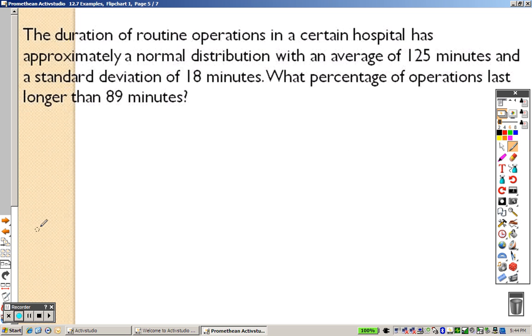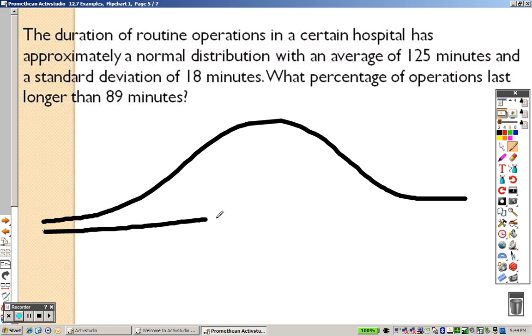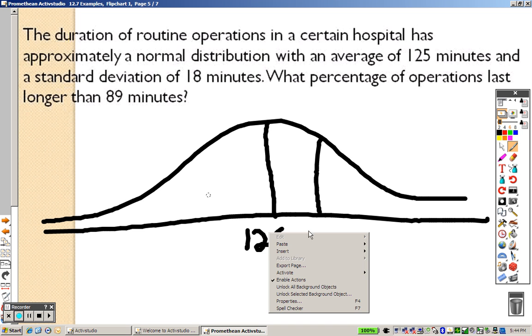So, now, we go to do this one, draw the curve, and put the line there, good, there's the middle, and it says that the mean and the average is 125 minutes. Standard deviation is 18, so 125 plus 18 is, let's see here, 143.